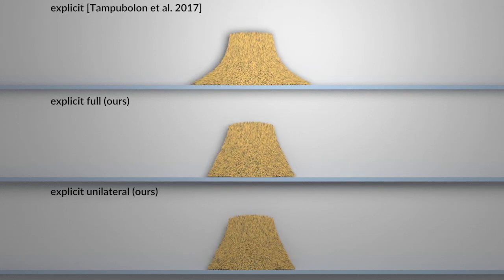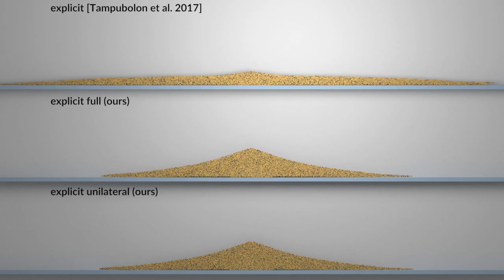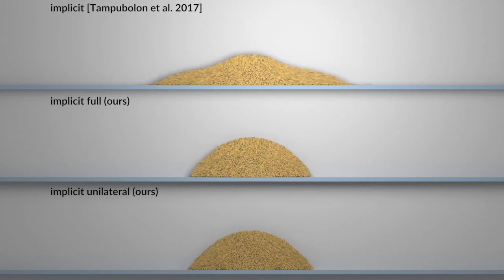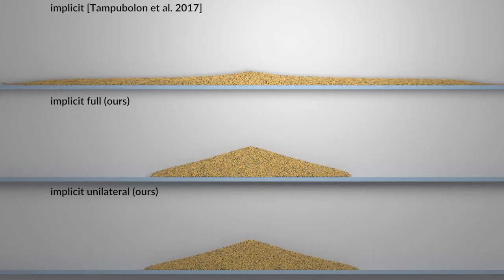Our model, on the other hand, does not require any additional parameters. Here we show a comparison result for explicit MPM. For implicit integration with lagged plasticity, our unilateral model closely resembles the characteristic shape of the original Drucker-Prager behavior, without suffering from overly spreading artifacts and unnatural wavy patterns.